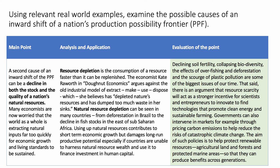Declining soil fertility, collapsing biodiversity, and the effect of overfishing are some of the biggest issues of our time. That said — and this is an evaluation phrase — there is an argument that resource scarcity will act as an incentive for scientists and entrepreneurs to innovate and find technologies promoting clean energy and more sustainable farming. Governments can intervene in markets — a carbon tax, for example — to help mitigate risks of catastrophic climate change. The aim of such policies is to promote renewable energy, fuel efficiency, better use of farmland, and protected marine areas, to achieve more sustainable development that benefits everybody across generations.